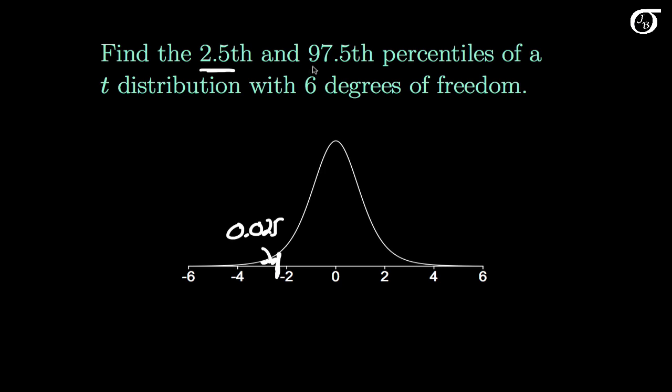Similarly, the 97.5th percentile is the value of the variable that has 97.5% of the area to the left, or 0.975. Since the area under the entire curve is 1, this implies the area to the right of the 97.5th percentile is 0.025. So that's going to be somewhere around here — the 97.5th percentile is the value of the variable that has an area to the right of 0.025.